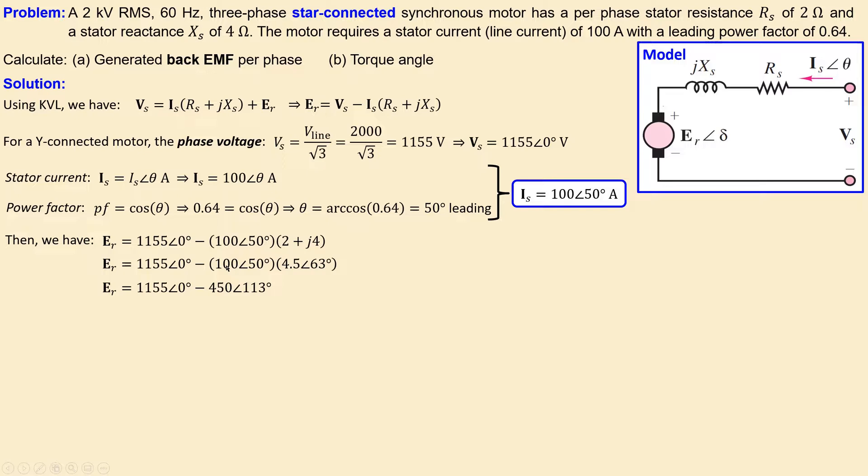We get 100 times 4.5, which is 450, and the phase is 50 plus 63, giving 113 degrees. To calculate the subtraction, we need to convert to rectangular form using this expression.